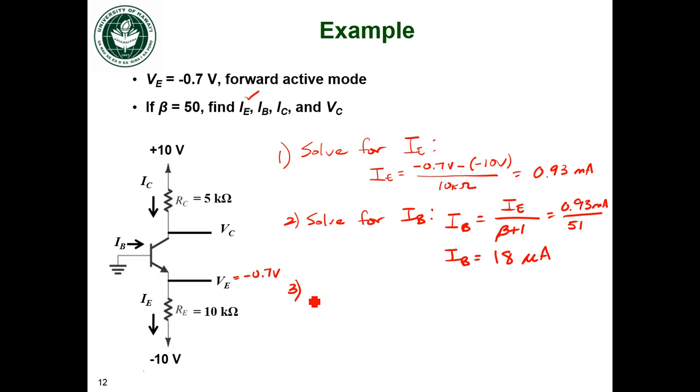Now I can solve for the collector current, and I'm going to use my forward active current relationship between collector current and emitter current. Alpha is equal to beta over beta plus 1.